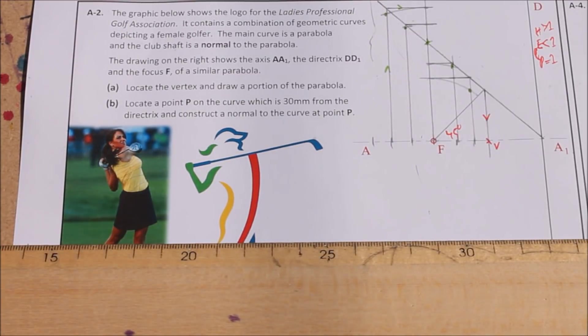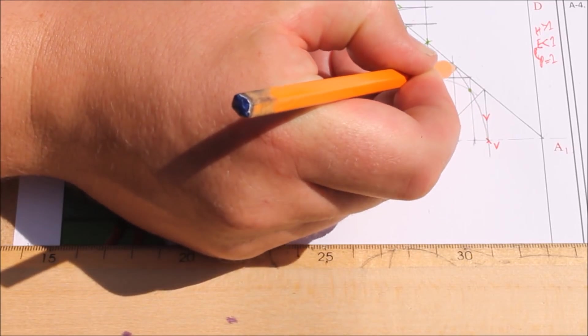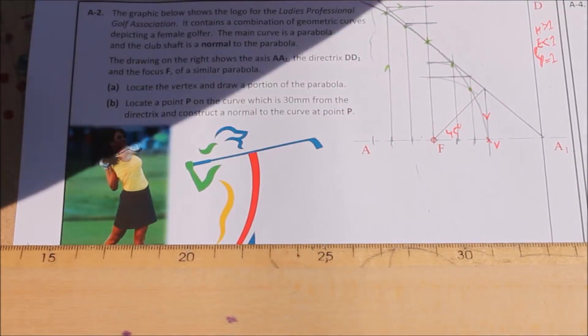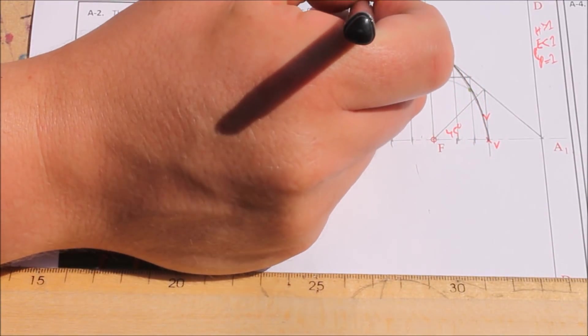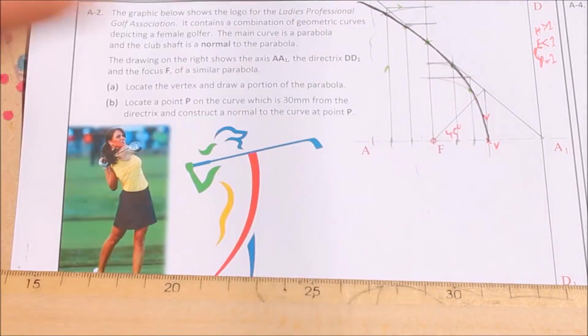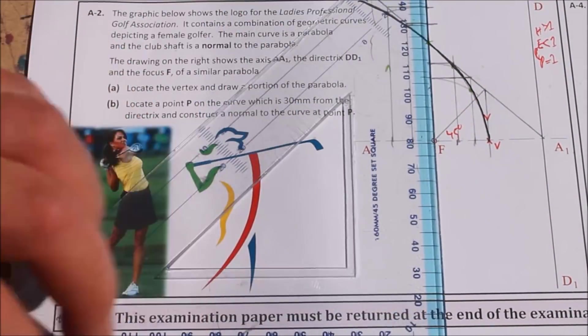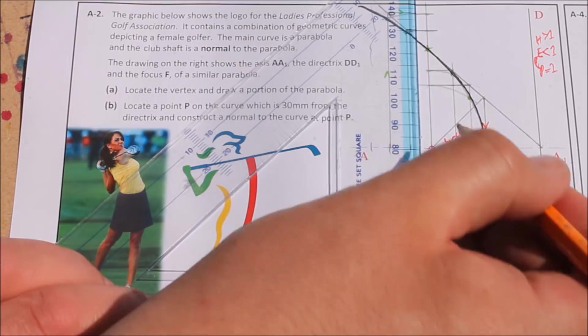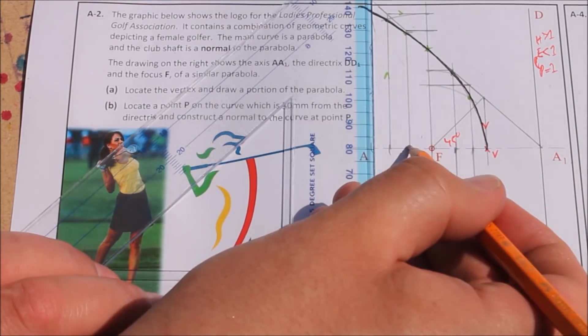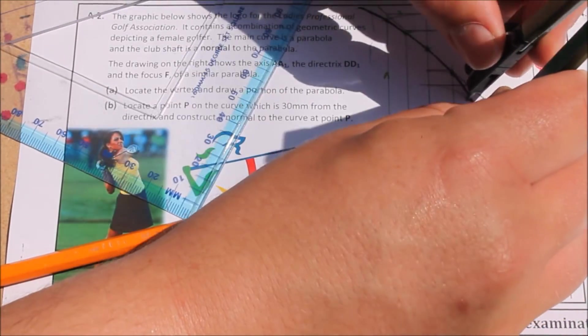I've given us a range of points on the parabola. Now you just join them in freehand lightly, and then you can go over the top.